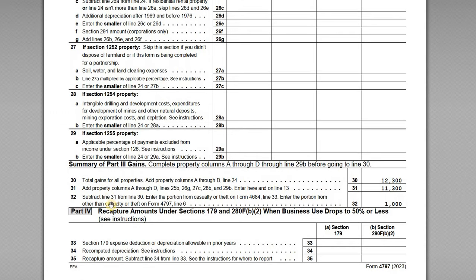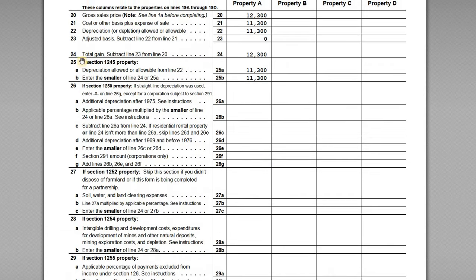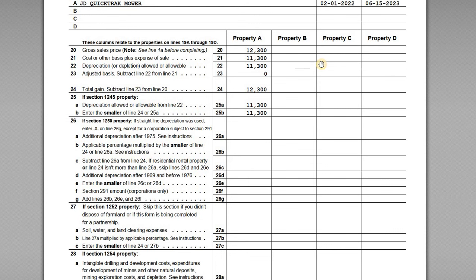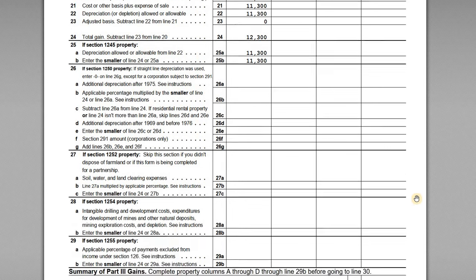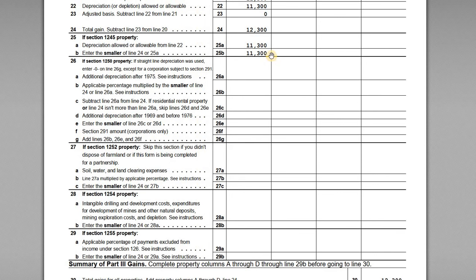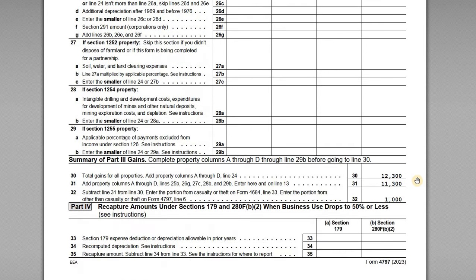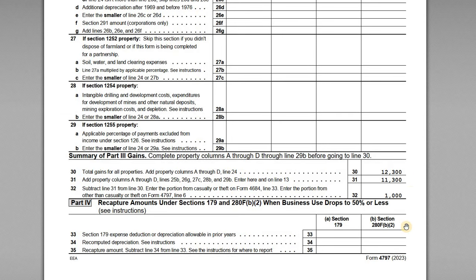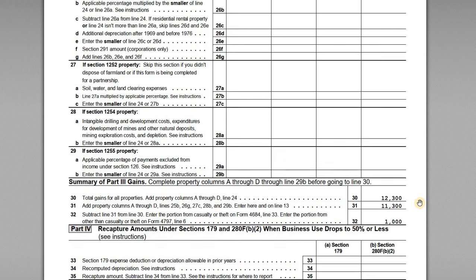At the bottom in the summary of gains, line 30, we enter the total gains for all properties — that's everything on line 24. We have just one property, so columns B, C, and D are empty, but the total gain is $12,300. Then we add the depreciation recapture from line 25b, which is $11,300, and subtract the two. On line 32 we're left with $1,000. A couple of items need to be transferred: the $11,300 is entered on line 13 of the 4797, and the $1,000 is entered on line 6 of the 4797.